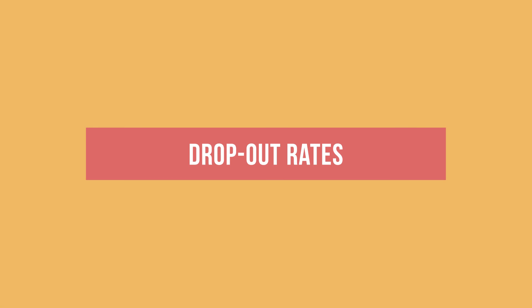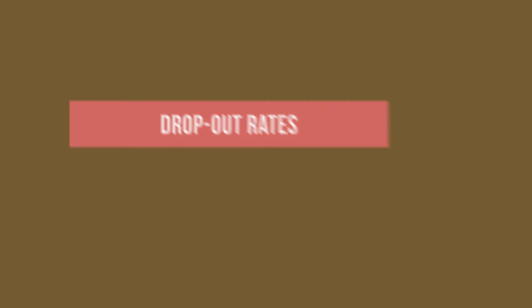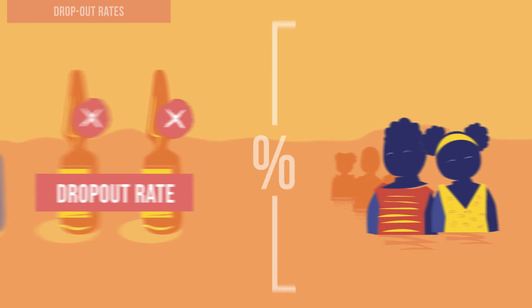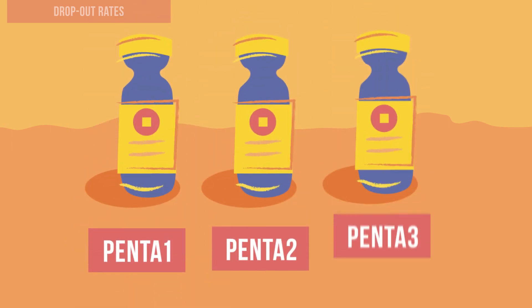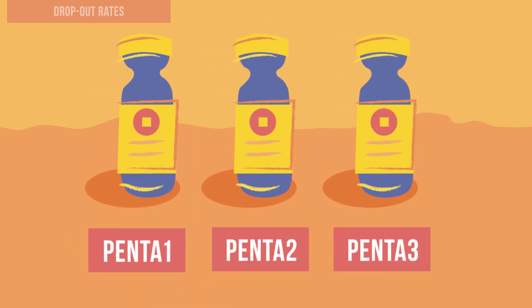The dropout rate shows the percentage of infants who have received one dose of a specific vaccine but who did not receive all doses in a series. For example, many countries measure the dropout rate by tracking whether infants who received the first dose of pentavalent vaccine also received the third dose of pentavalent vaccine.